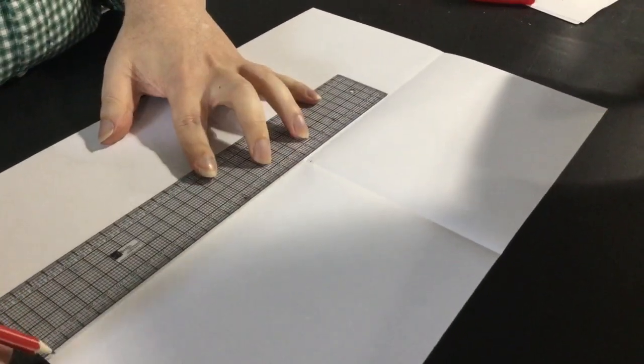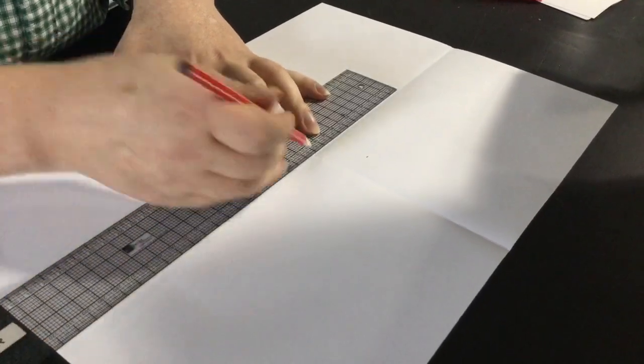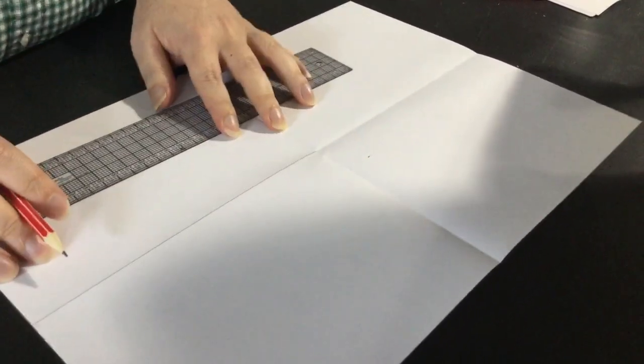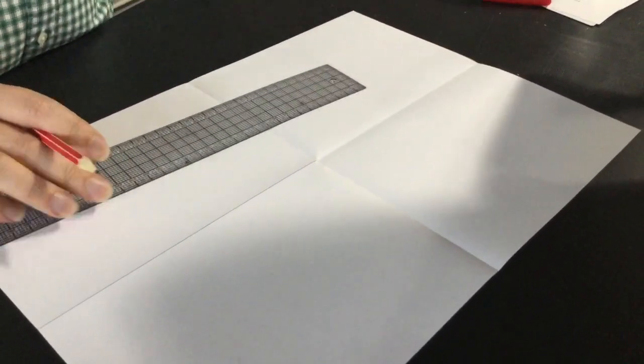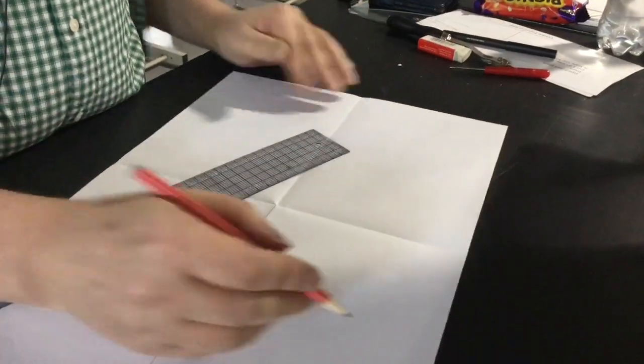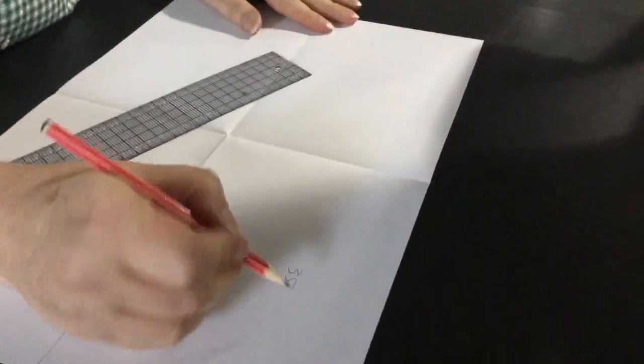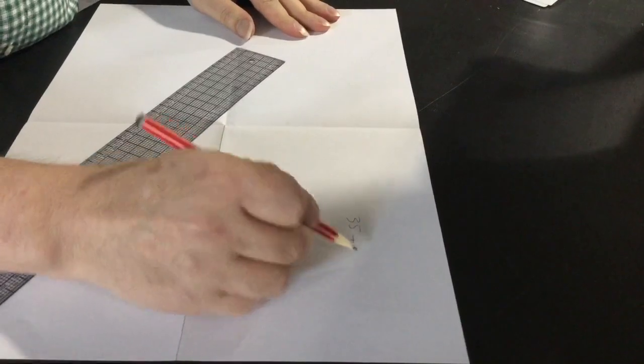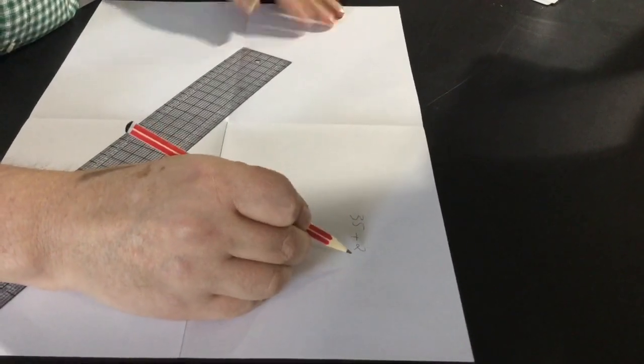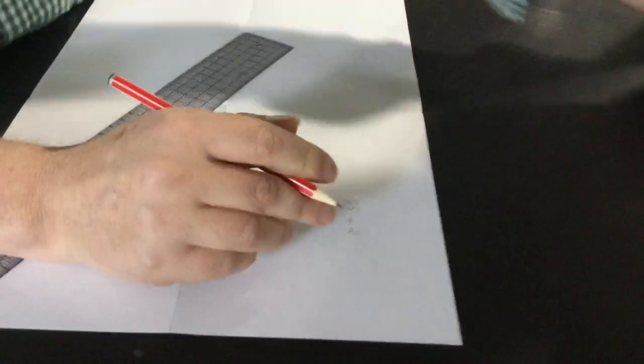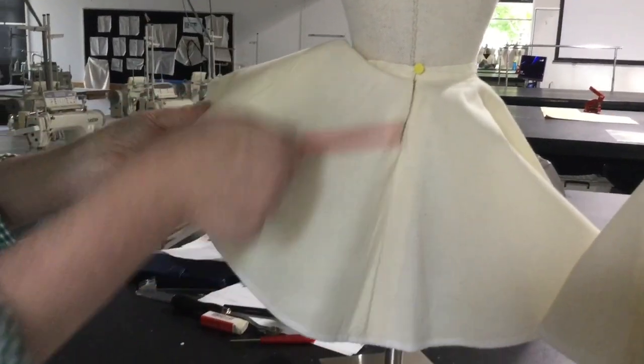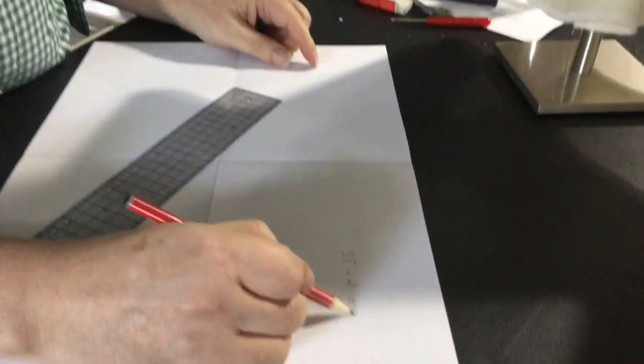And so then we'll just add in our center back here. So what we need to do - we've got a 35 centimeter waist plus two centimeters, which is the two times one centimeter seam allowance for the center back, which is 37.